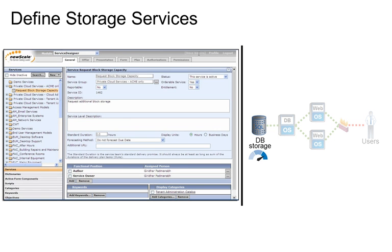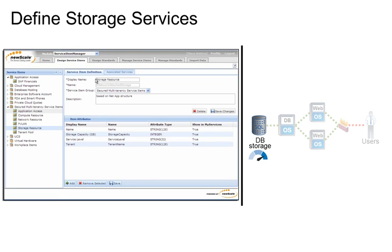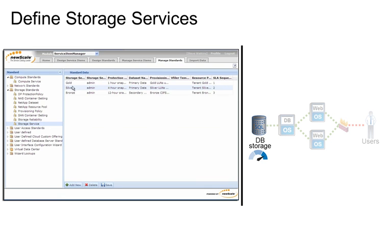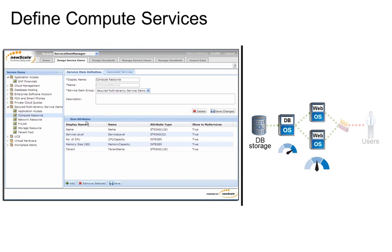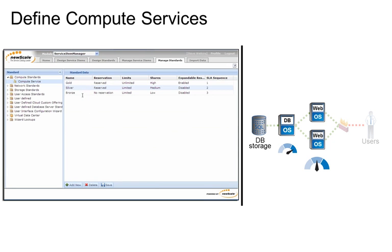When Steve, the Cloud Admin, defines storage services, he first goes to a simple service design tool and creates a Request Block Storage service. He associates this service to a storage resource and provides service level options from which to choose. Steve also configures the compute service called Request Computing Capacity in the Service Design Tool, assigns a compute resource, and shows available options, which will be used by the tenants to order their compute selections.